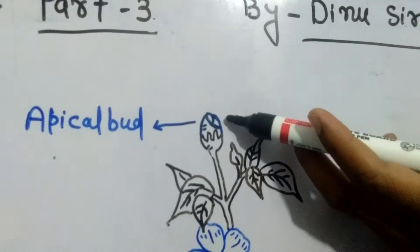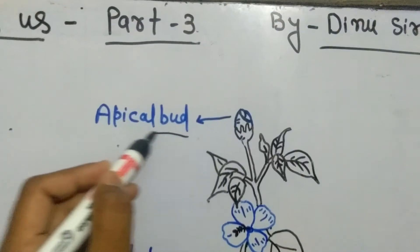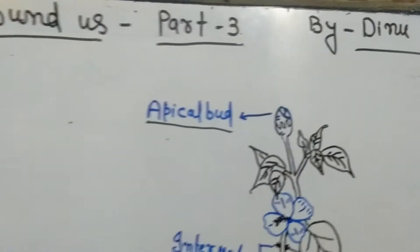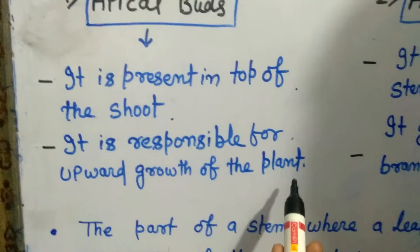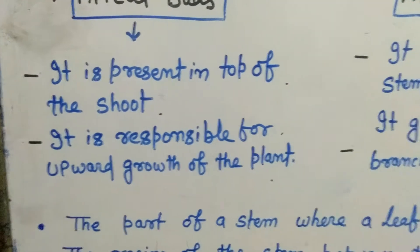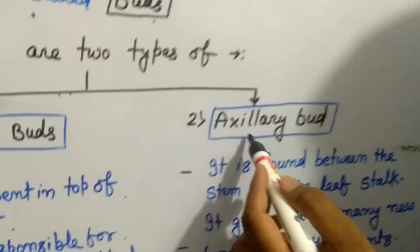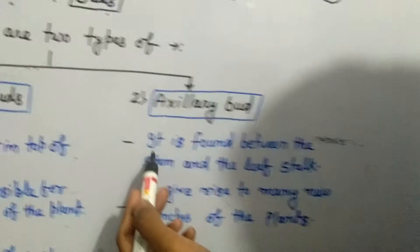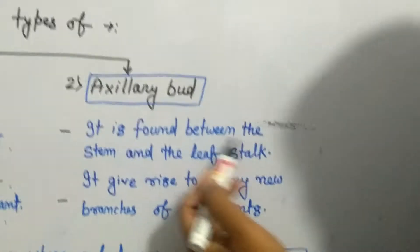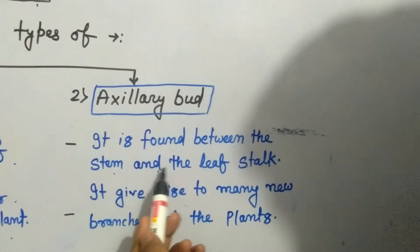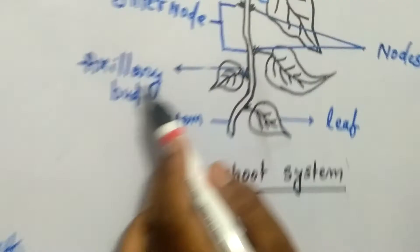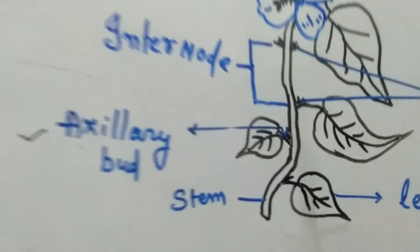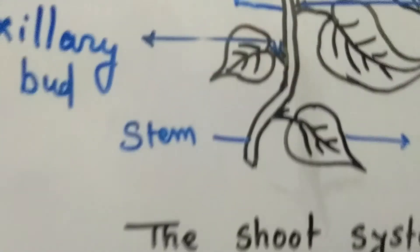The apical bud is responsible for the upward growth of the plant. The axillary bud is formed between the stem and the leaf stalk. Here, see in the figure — this is the axillary bud and this is the leaf.